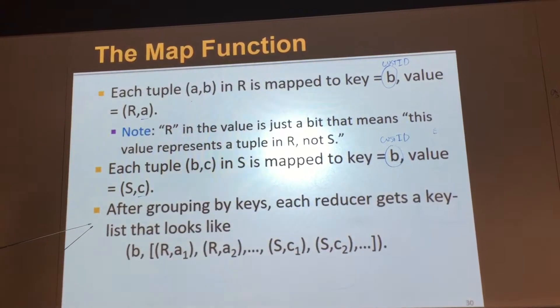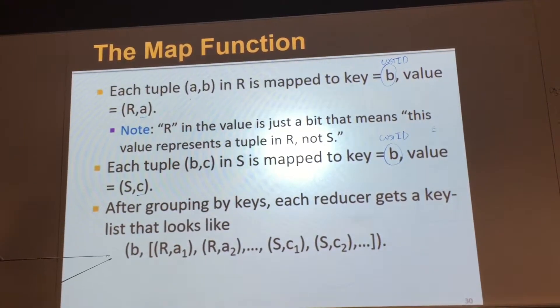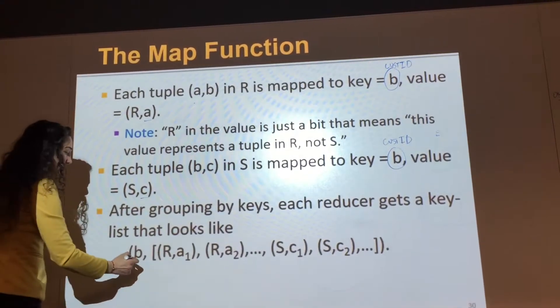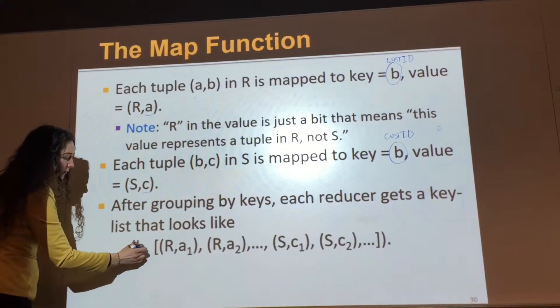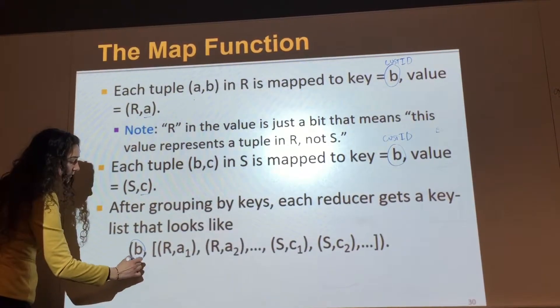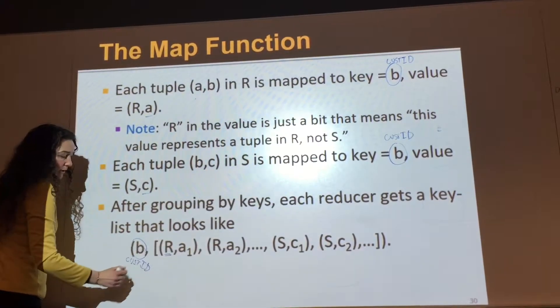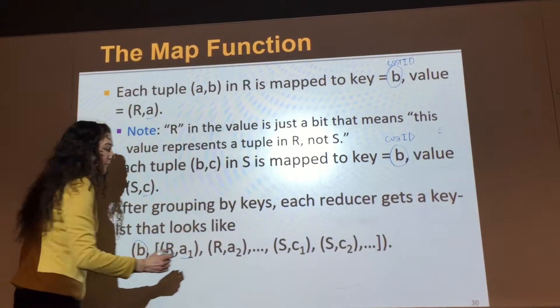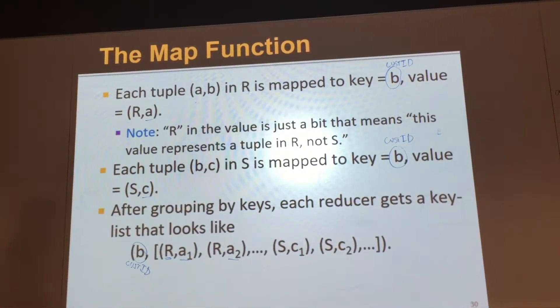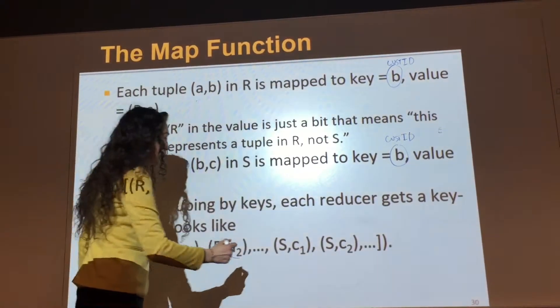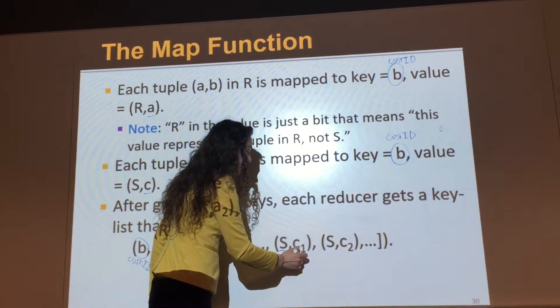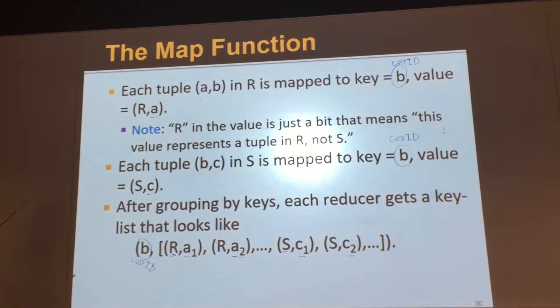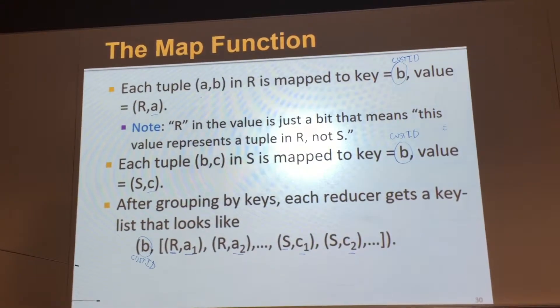We're going to group by keys and each reducer will get a key list that looks like this. For customer ID B, from the first table, we have one value. There was one row for B, but we also have one more row for the same B. And in the second table S, we have also two rows for that, particularly. So we've produced two rows if you look on the previous picture.